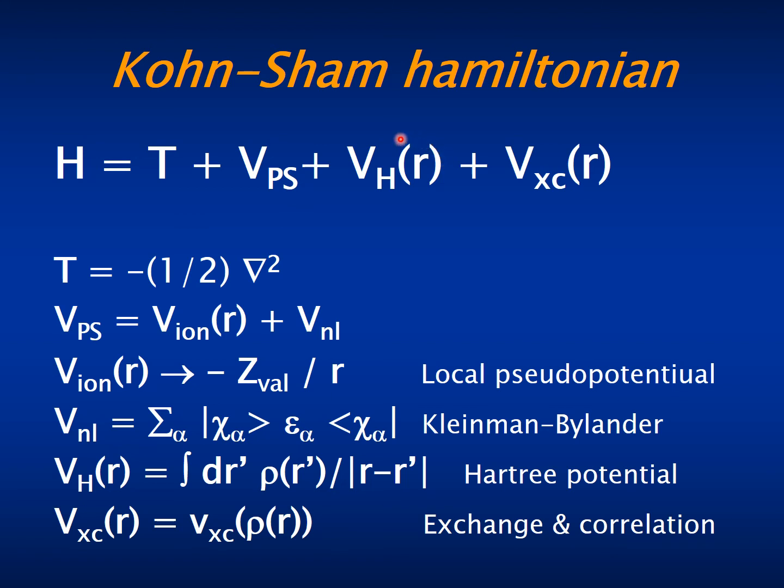The Hartree electrostatic potential produced by the valence electrons only, and the exchange and correlation potential that depends on the valence electron density also. The pseudopotential operator is in turn composed by two terms.